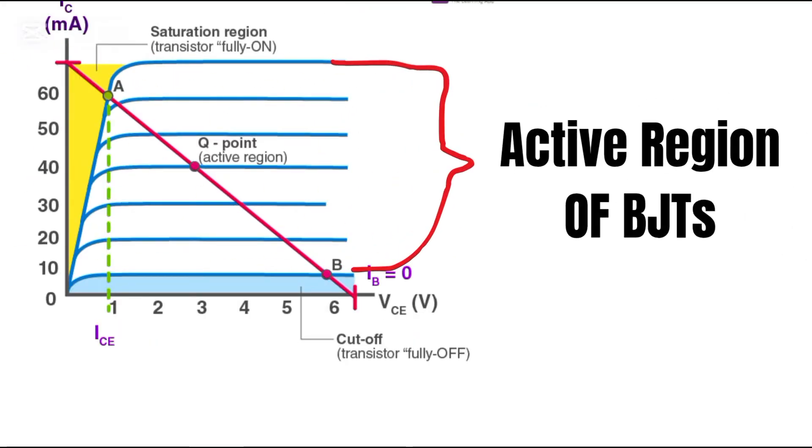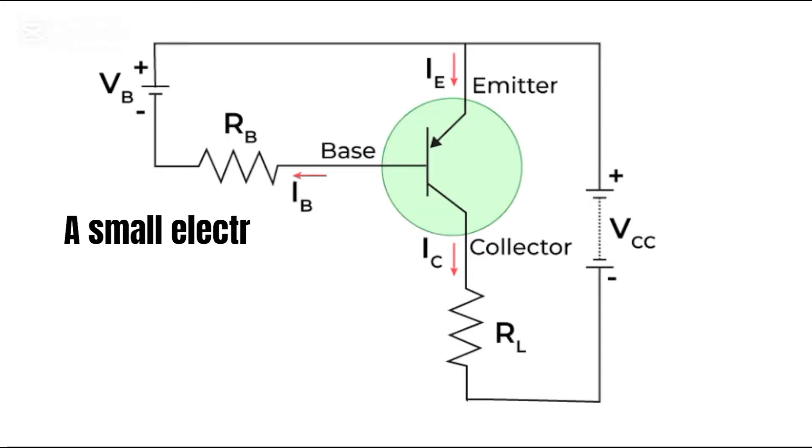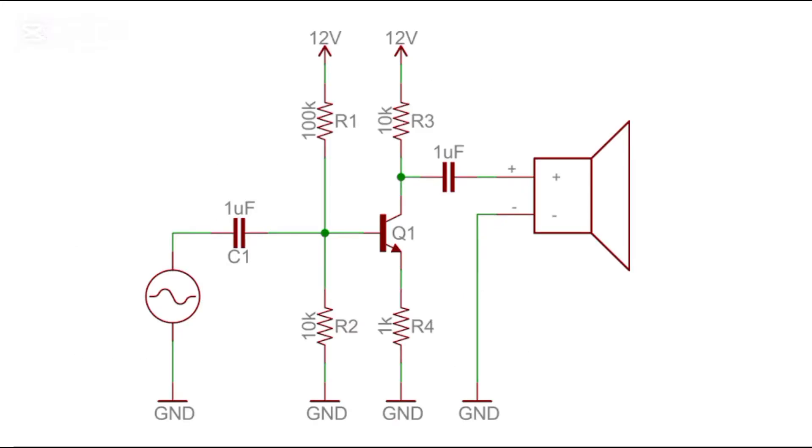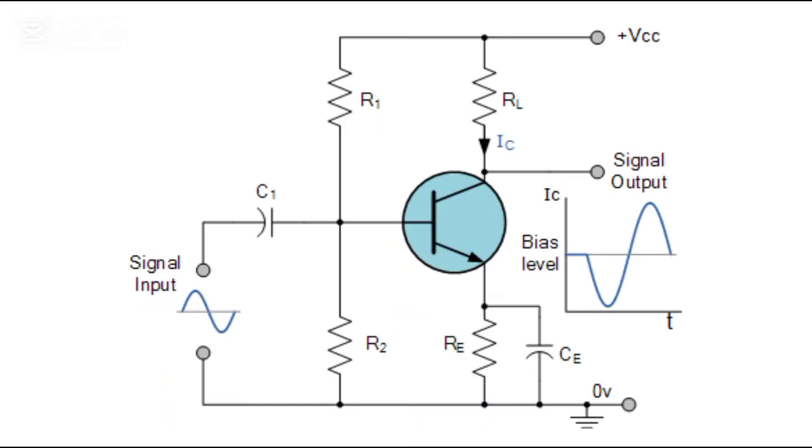In the active region, the BJT acts as a controlled current amplifier. A small current at the base terminal controls a much larger current flowing from the collector to the emitter. This makes the active region ideal for analog circuits such as amplifiers for audio, radio signals, and instrumentation.